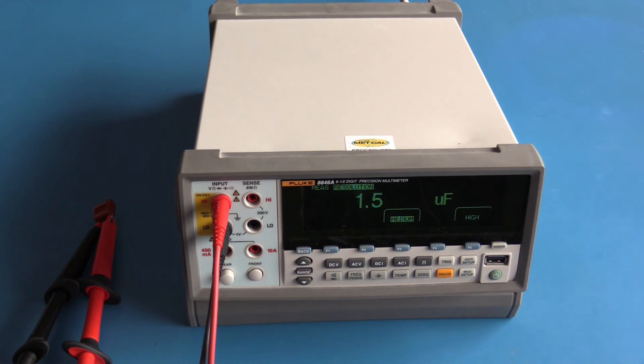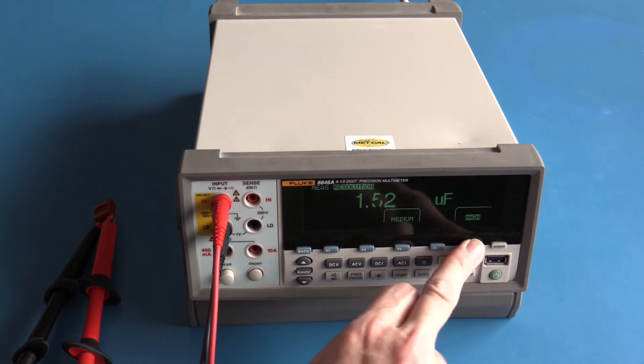Although the Fluke 8846a does have a capacitance mode, it's no better than most handheld meters. Here we're reading a capacitor at 1.5 microfarad. A high resolution tells us it's 1.52 microfarad.